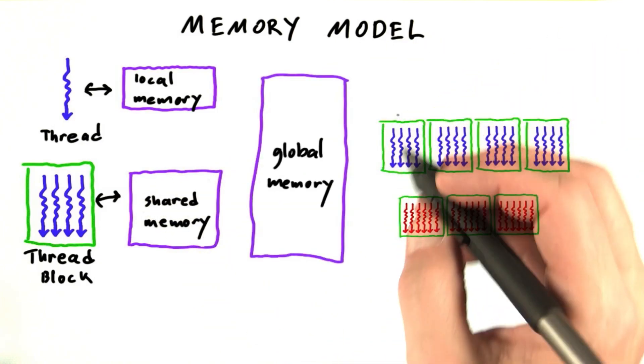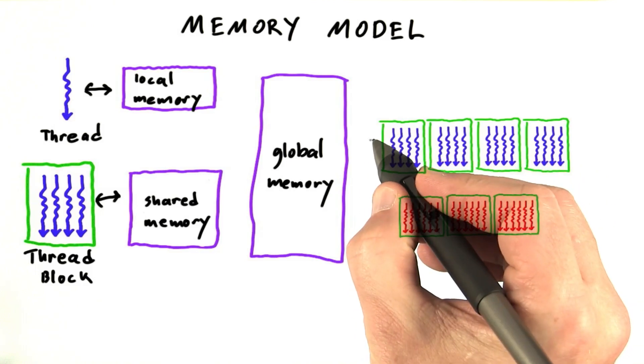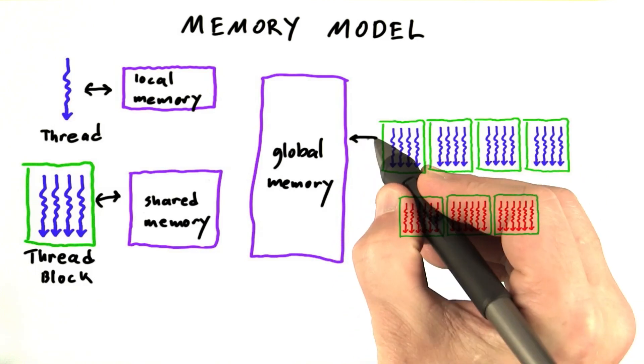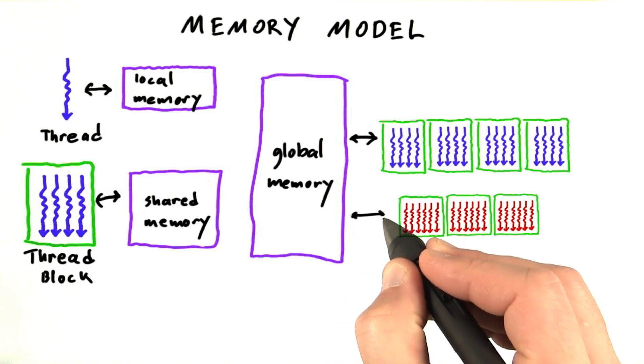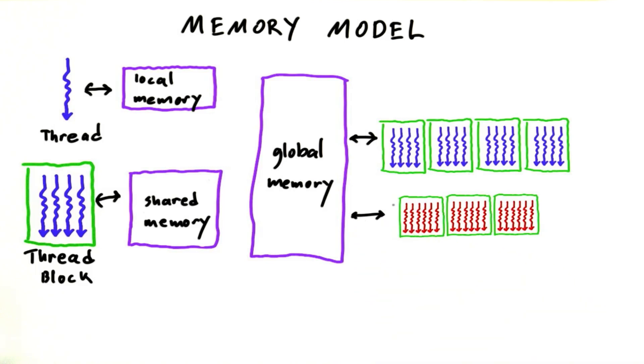And finally, there's global memory. Every thread in the entire system at any time can read and write to global memory. So threads in one kernel can read and write from it. Threads in a later kernel can also read and write from it.